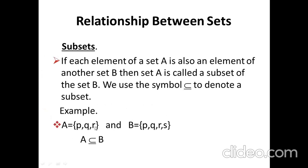For example, if A = {P, Q, R} and B = {P, Q, R, S}, we can see that all elements of set A are present in set B. But all elements of set B are not present in A — B has an extra element S. So only A is the subset of B. Then B becomes the superset of set A.